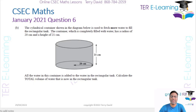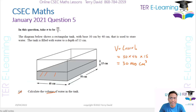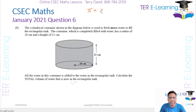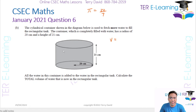In Part B, we have a cylindrical container shown in the diagram. It's used to fetch more water to fill the rectangular tank. The container, which is completely filled with water, has a radius of 20 cm and a height of 21 cm. They've told us to take pi as 22 over 7. All the water in this container is added to the water in the rectangular tank, so we first need to figure out the volume of water in this cylindrical container.